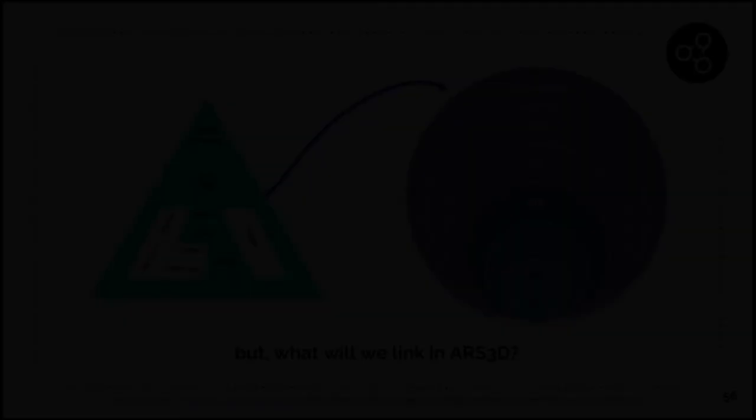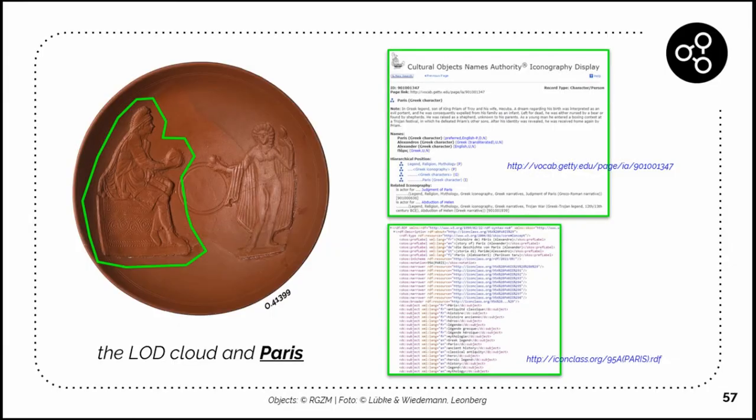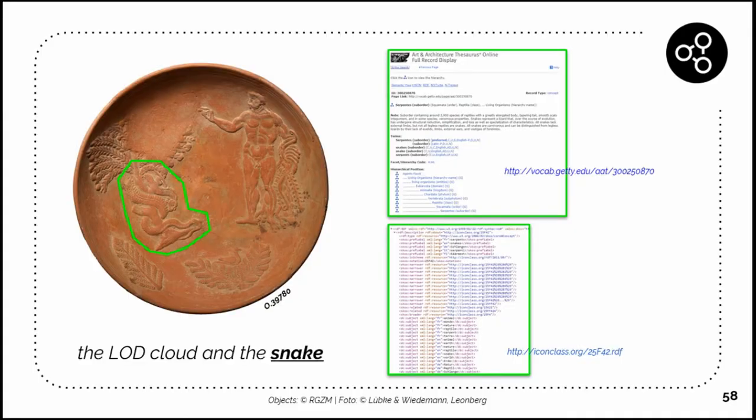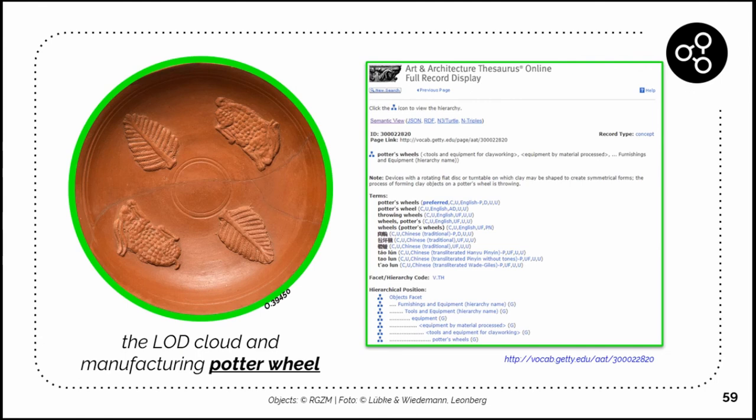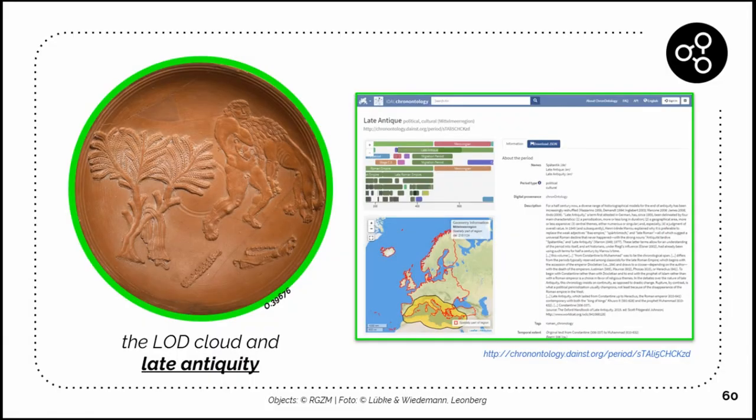But what we will link in ARS3D: for example, if we have some kind of bowl here and there is Paris on it, we can link it, for example, to the Getty and to Iconclass. Here you can find a snake, and maybe you can link it also to Getty or to Iconclass or to whatever. Then this plate is manufactured by a potter wheel—you can also link it, for example, to the Getty thesaurus. If we are looking for periods and so on, we can just choose one of the gazetteers for time, for example ChronOntology or PeriodO or whatever, just to have an external reference on the web.